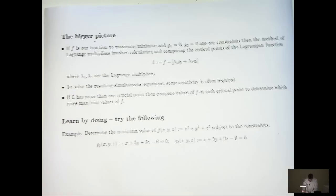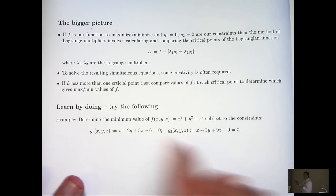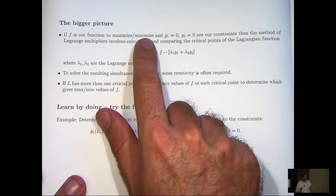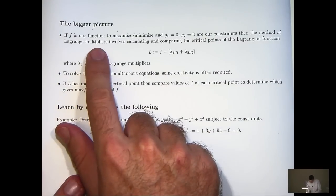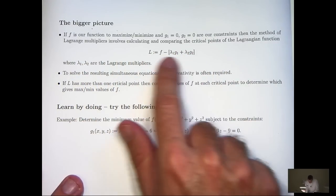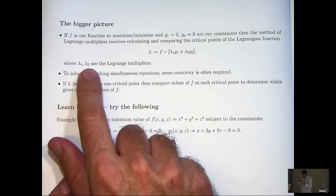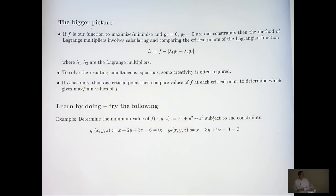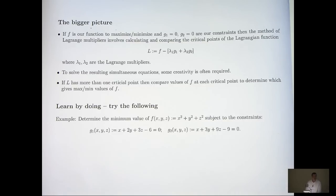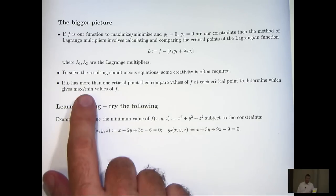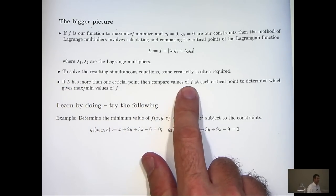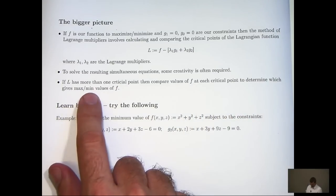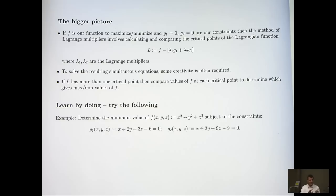Let's look at the bigger picture, though. What are some techniques or some ideas that you can use in all sorts of problems? Well, if f is our function to maximize or minimize, and we have two constraints, then the method of Lagrange multipliers involves calculating and comparing the critical points of the so-called Lagrangian function, where lambda 1 and lambda 2 are the Lagrange multipliers. Now, to solve the resulting simultaneous equations, some creativity is often required. In the example that we just did, we had 5 equations and 5 unknowns. It took us a little while to solve them, but it was pretty straightforward. Now, if L has more than one critical point, then what you do is you compare the values of f at each critical point to determine which gives the max or min value. In our example, there was only one critical point, so I didn't have to compare values at all.